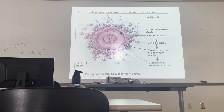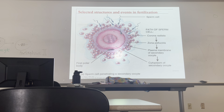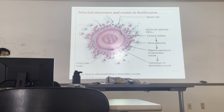Fraternal twins come from two eggs fertilized by two separate sperm. Ovaries take turns ovulating — sometimes one ovary ovulates, next month it's the other. Sperm travel to both sides, so technically the two eggs could come from different ovaries, though more likely from the same one.